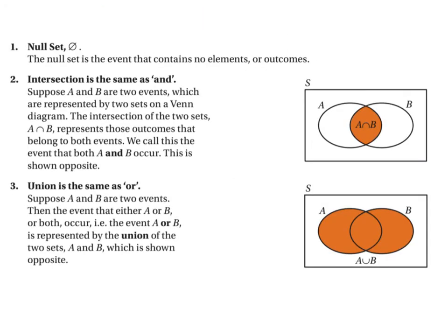What we have here is the null set — we know the null set contains nothing. Remember, that is given by the zero with the line through it, or we can draw a set with nothing in it. If you see the word 'and' in a probability question, that means it's the intersection of the two sets — this bit here. So A intersection B means that the two events have both happened.